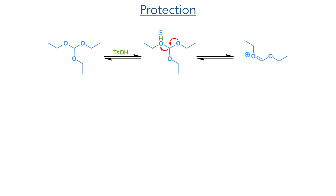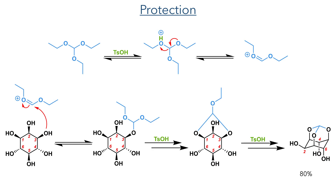So let's start with the synthesis. The first step was to protect myo-inositol with triethyl orthoformate. This is first protonated by tosic acid, eliminating an equivalent of ethanol and forming a reactive oxonium intermediate. This is attacked by one of the hydroxyl groups, forming an orthoformate that undergoes further reaction, eliminating another equivalent of ethanol and then reacting with a second hydroxyl group on the molecule. This process repeats once more, forming a compound with three protected hydroxyl groups in an 80% yield.